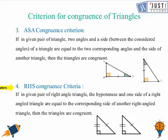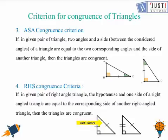Then we have the RHS criterion, which stands for Right angle-Hypotenuse-Side. As the name suggests, it is applicable only in the case of right-angled triangles. The right angles are equal in all cases, and if the hypotenuse is equal in two triangles and so is one of the other sides, then those two triangles are congruent by the RHS criterion.